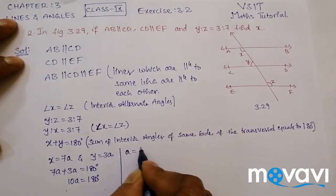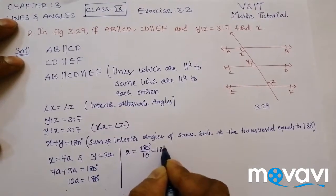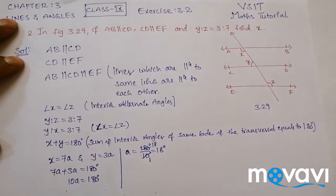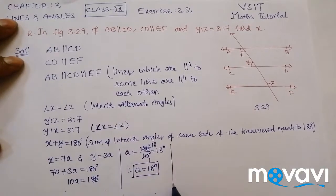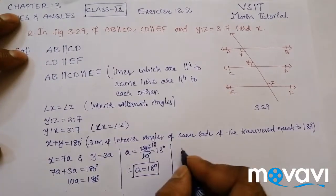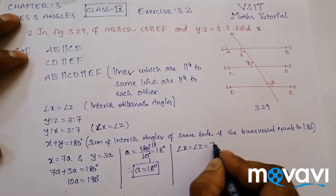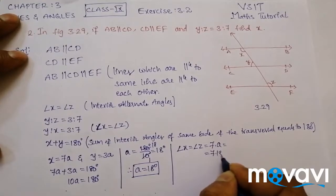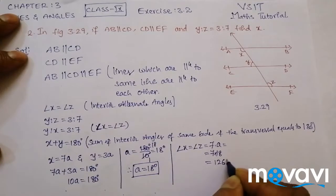So A will be equal to 180 degrees divided by 10, which is equal to 18 degrees. Therefore A is equal to 18 degrees. If A is equal to 18 then we need angle X, which is equal to angle Z, and is 7 times A. That is 7 into 18, which is equal to 126 degrees.